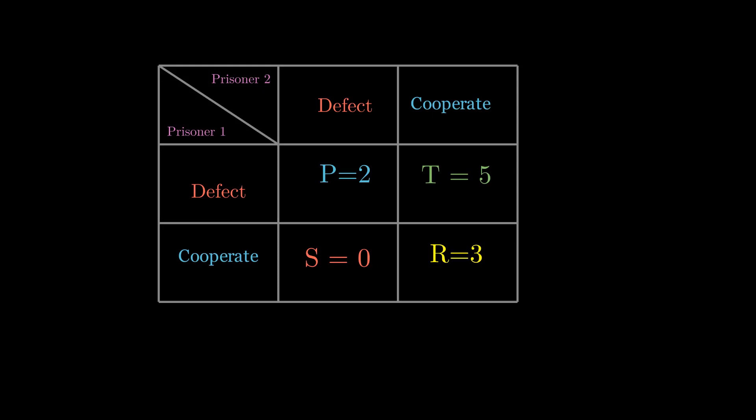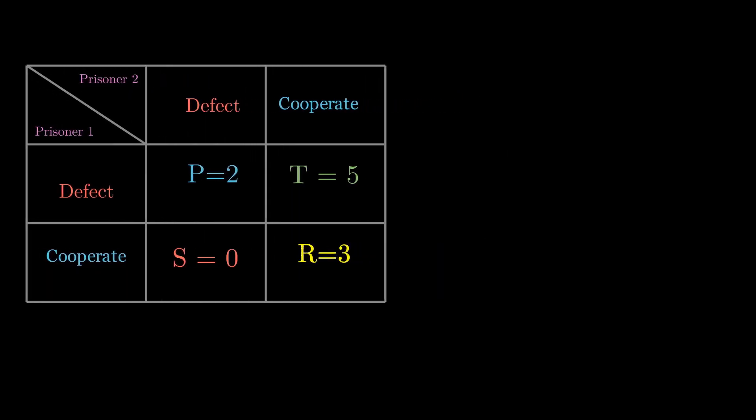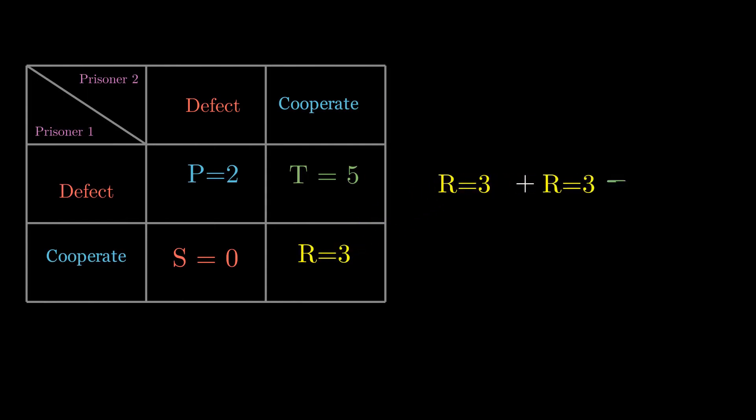Initially, it feels like cooperating is the best option because when both of them cooperate, each gets three points reward of cooperation. They accumulate six points in total, serve very few years in prison and live happily ever after.